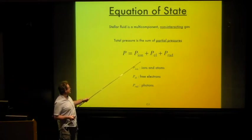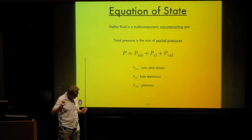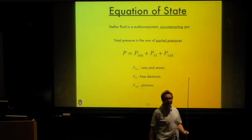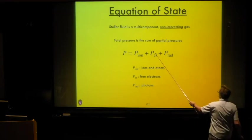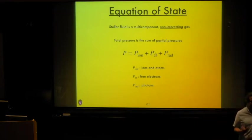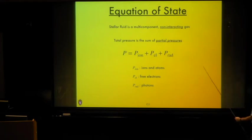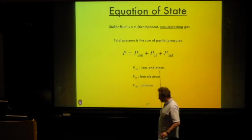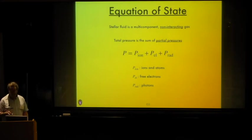The three components are: pressure from ions (anything with a nucleus — bare nuclei, ions, and neutral atoms), pressure from free electrons (electrons that in cold material would be bound to atoms but have been ionized by the high temperatures of stars), and radiation pressure from photons. To calculate total pressure, we just calculate the ion pressure, the electron pressure, and the photon pressure, and add them together.